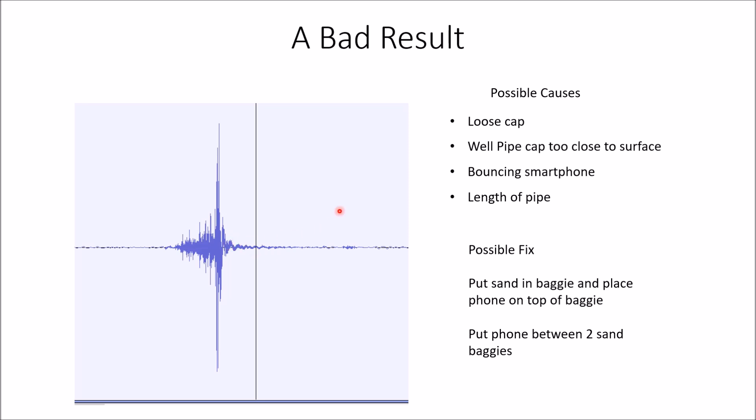And some of the possible causes are a loose cap on the top. We didn't really check it that well. The well pipe cap is too close to the surface. Remember I mentioned mine is 12 to 18 inches above the ground. His is like four inches off the ground. So I think sometimes when we're hitting the casing we're actually hitting the cap. And it was causing the cap to vibrate. It was causing the iPhone to bounce. And that was a problem.